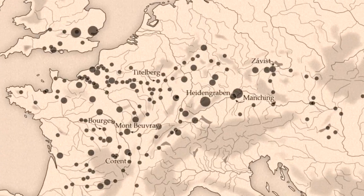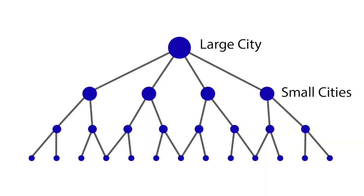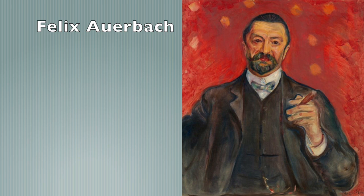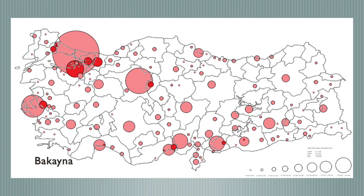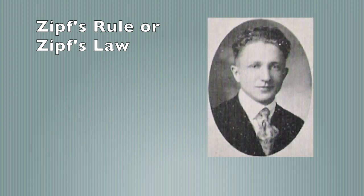When archaeologists study ancient settlement patterns, especially for societies that had urbanism, they often think in terms of the rank-size relationships among the sites. A German physicist named Felix Auerbach had observed way back in 1913 that when you look at population sizes in modern countries, the second largest city was usually about half the size of the largest city, the third largest was a third that size, the fourth largest was a quarter that size, and so on. Over the next 20 years, it was found that this relationship applied to lots of other things besides cities, and it became known as Zipf's Rule, after the American linguist George Zipf, who applied it to the frequency of words in the English language during the 1930s.